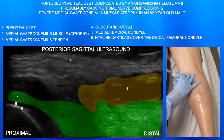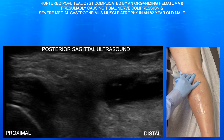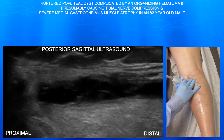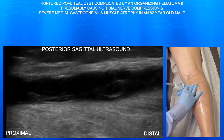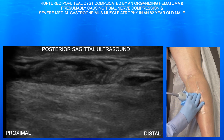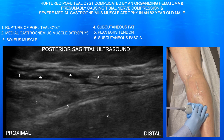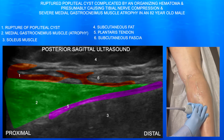Here we are looking at the proximal aspect of the cyst in addition to the proximal aspect of the medial gastrocnemius muscle. You can also see the medial gastrocnemius tendon overlying the posterior aspect of the medial femoral condyle. Here we're going distally, and you can see the extent of this rupture and the extent of this cyst. Here you can see some of the fluid again within the subcutaneous fascia, which is just superficial to the medial gastrocnemius muscle.